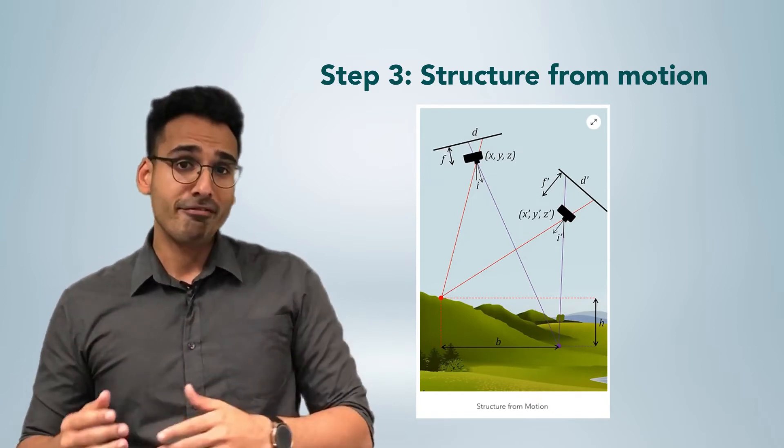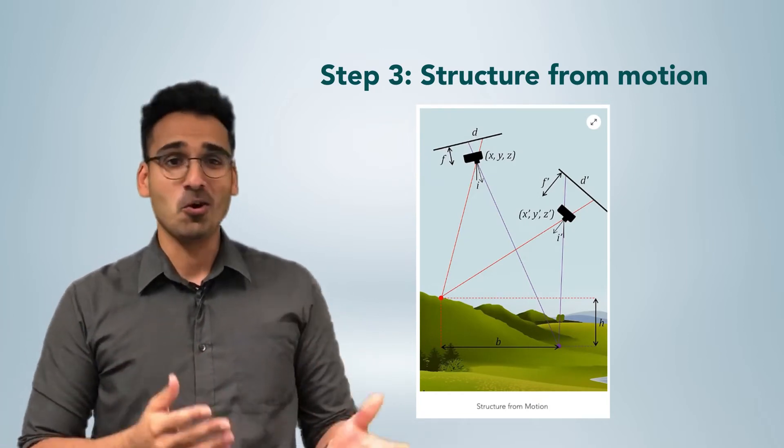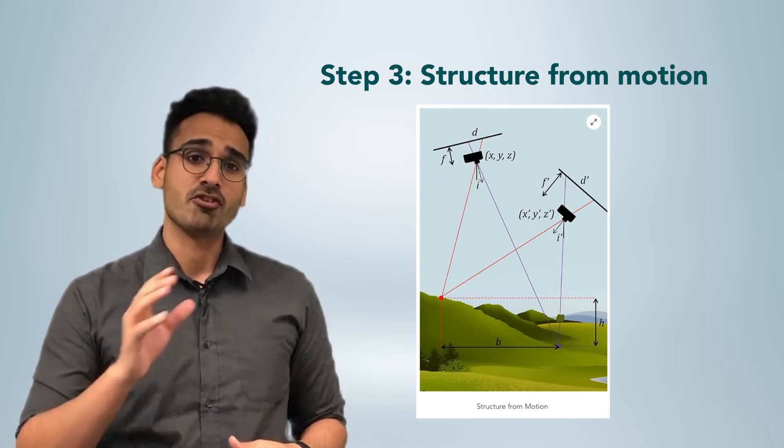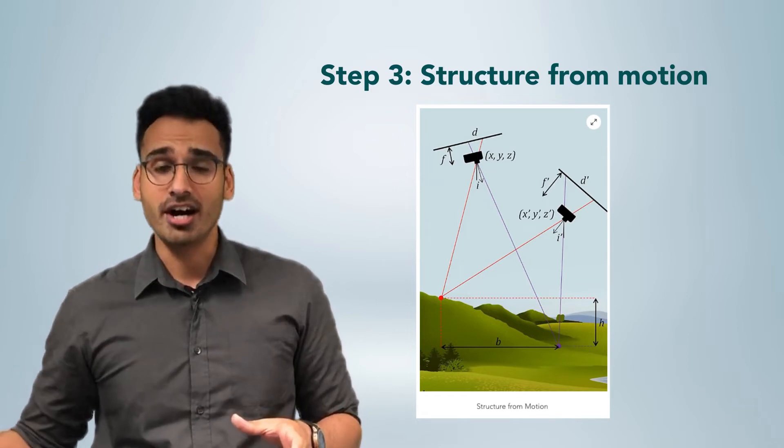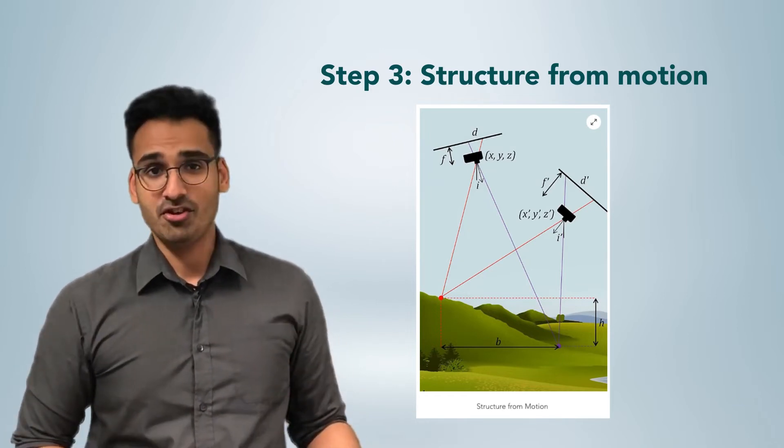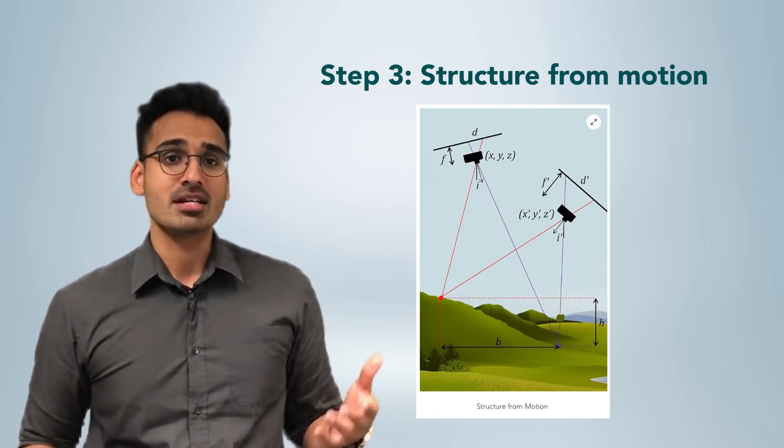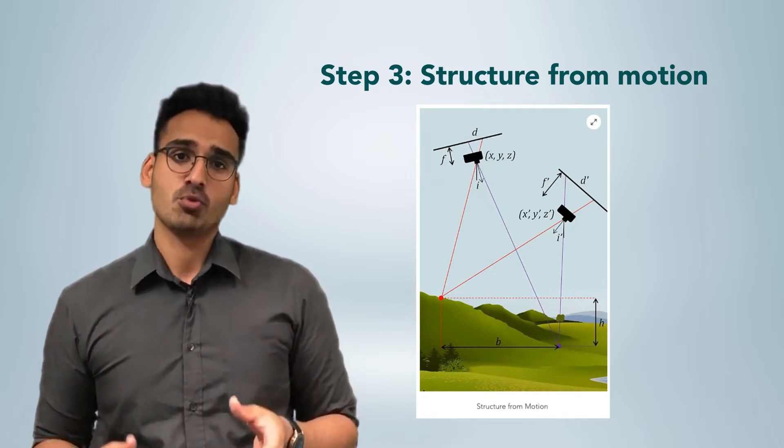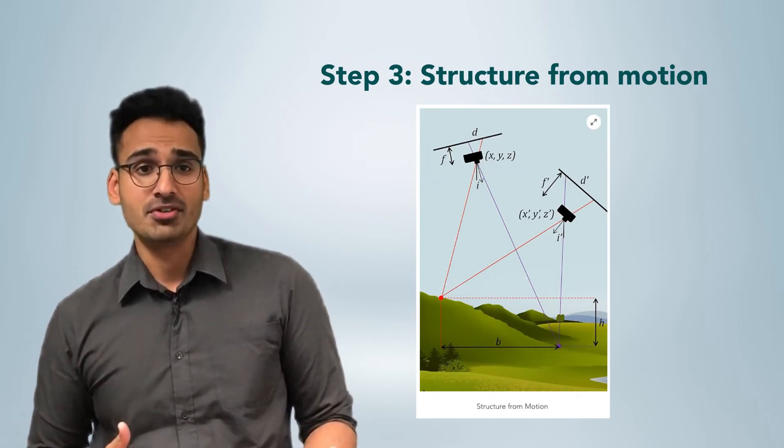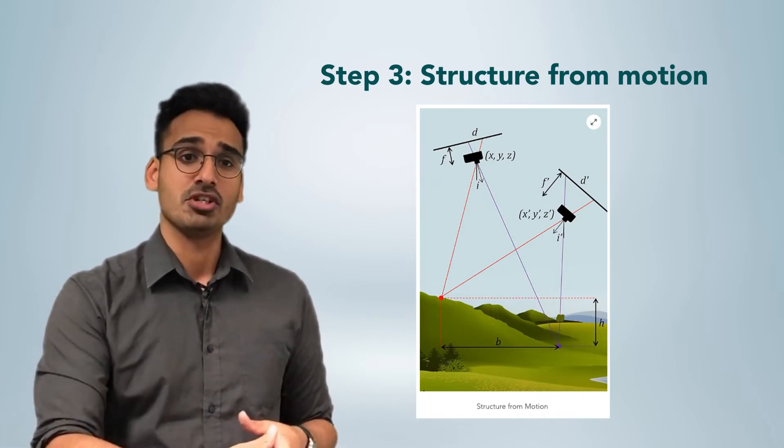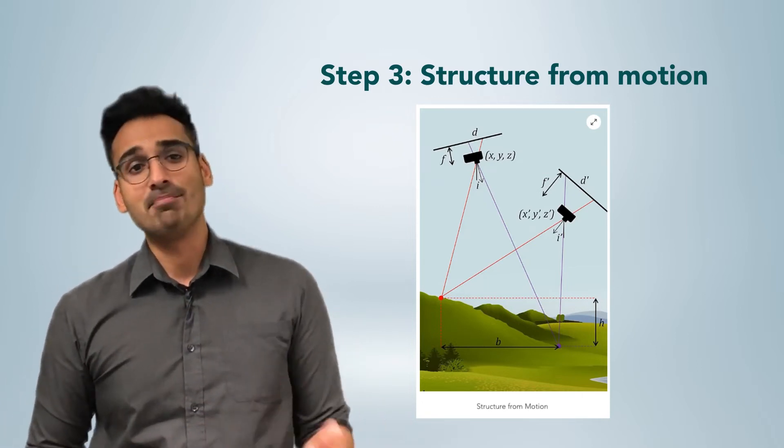The above image looks daunting, but essentially the software estimates 3D points using triangulation techniques and the motion of key features over time. In the image shown, the red point and purple point are features which have been found in two different images. The camera position and parameters are used to estimate the 3D position and orientation of the red and purple points.